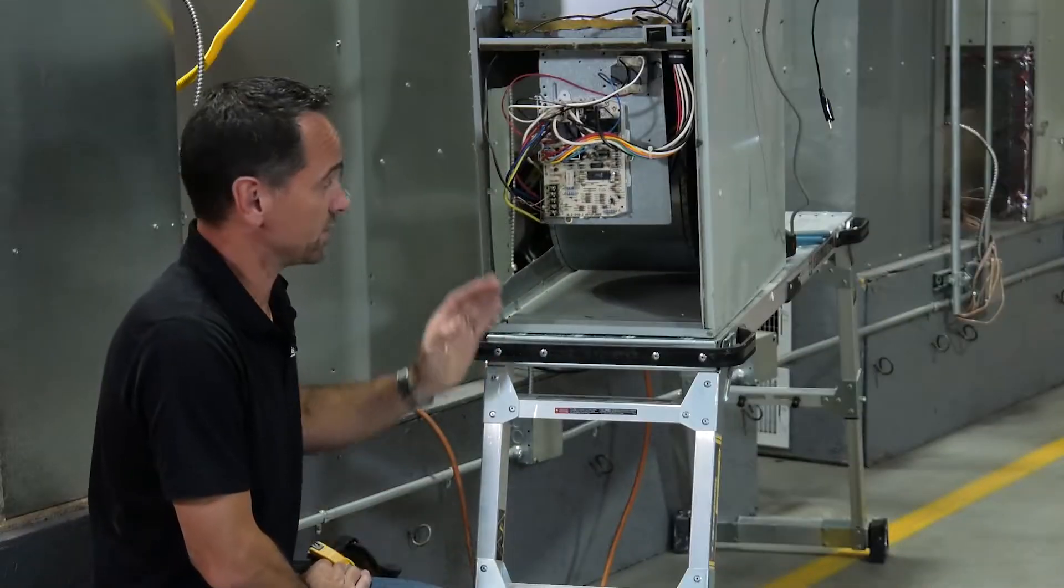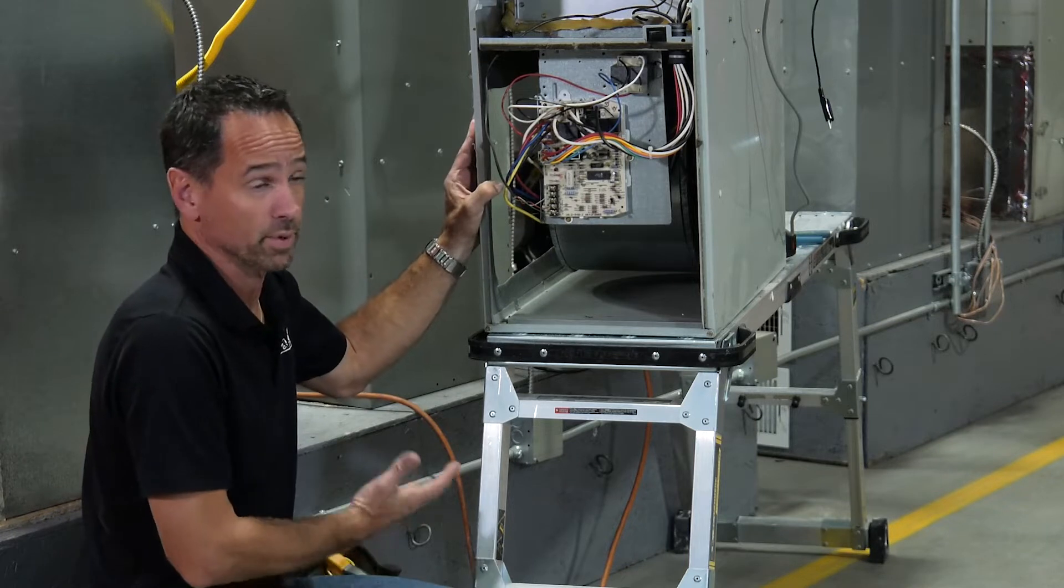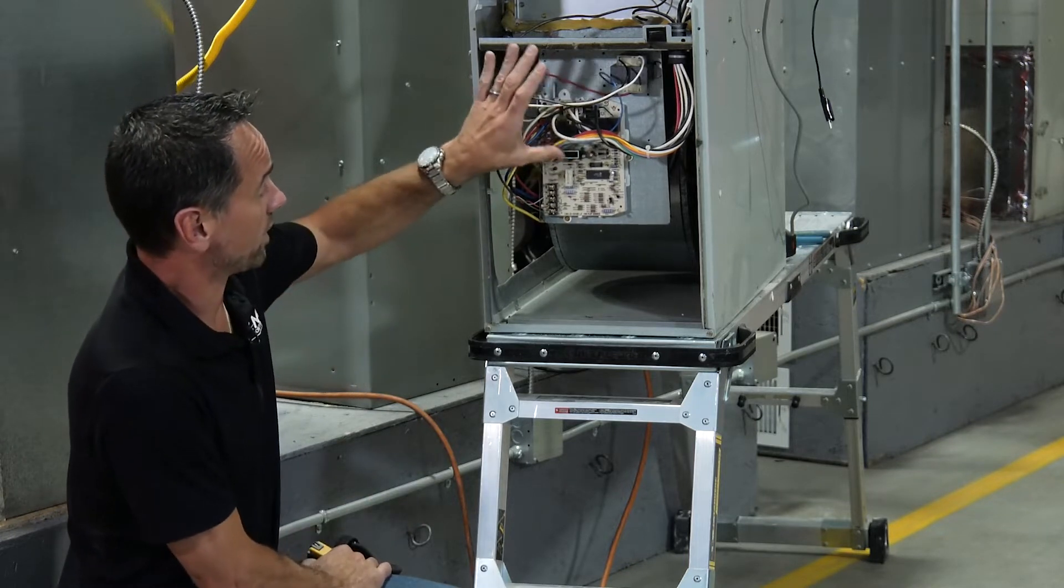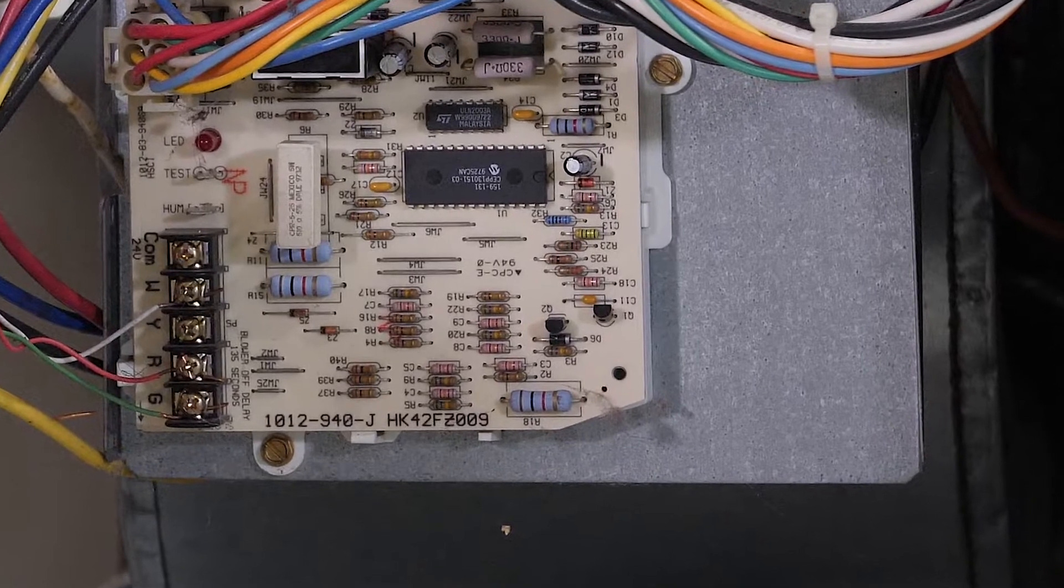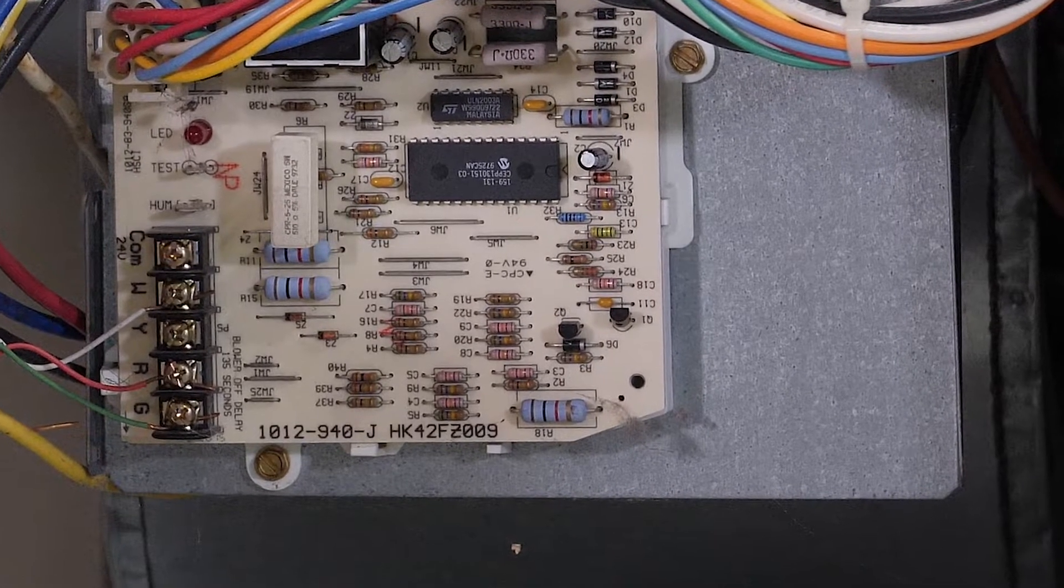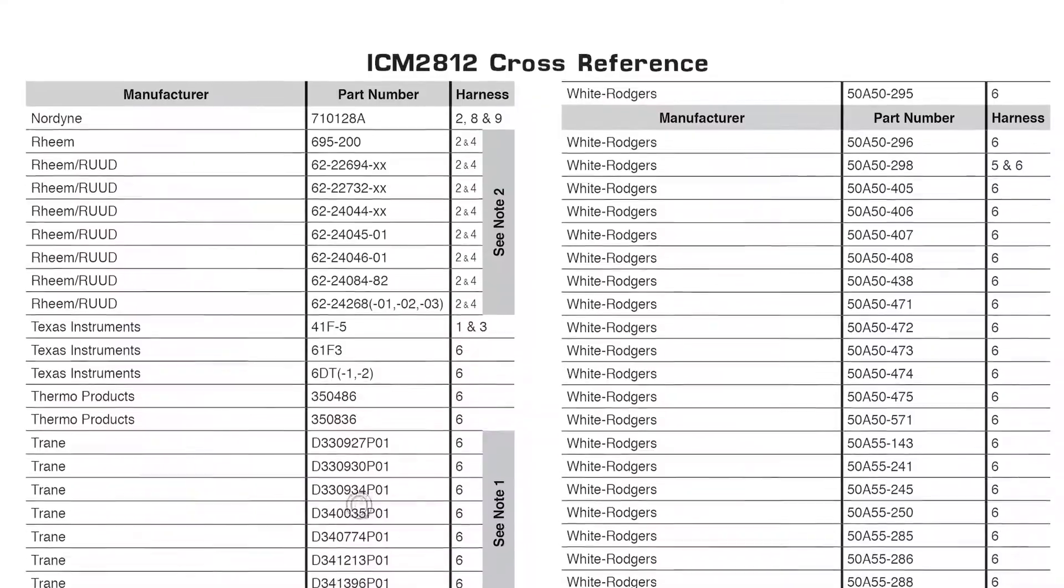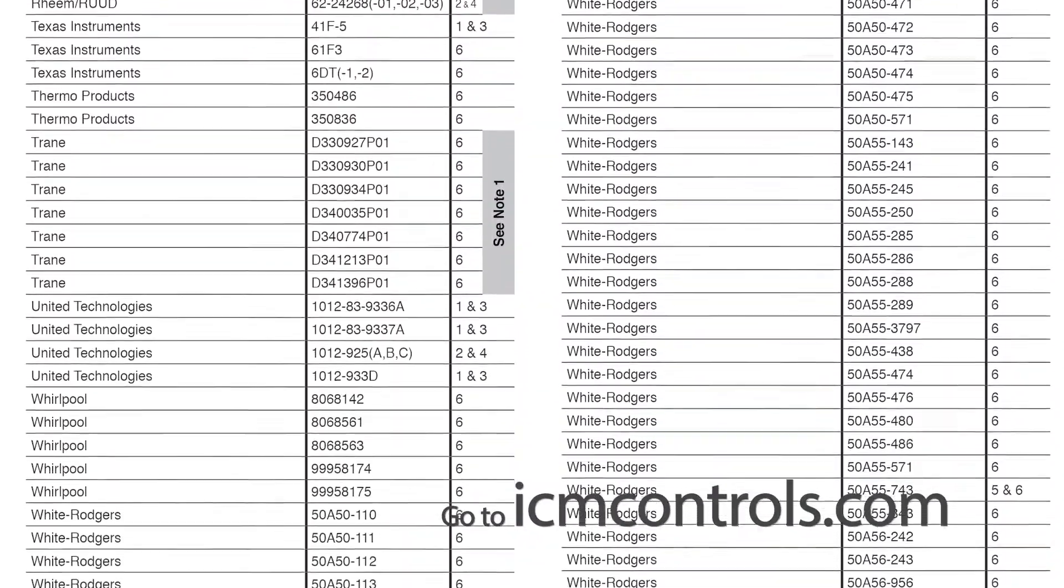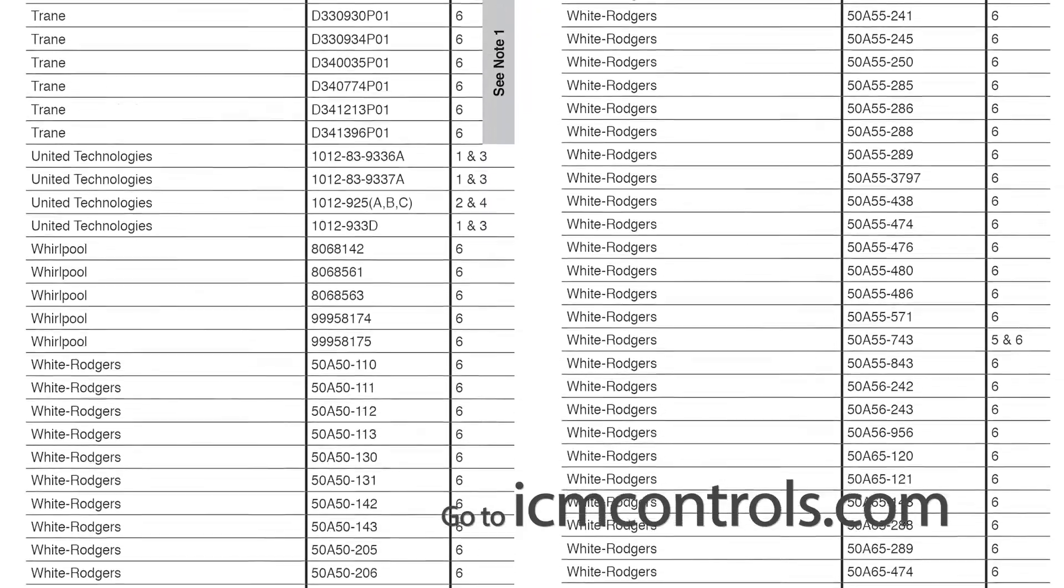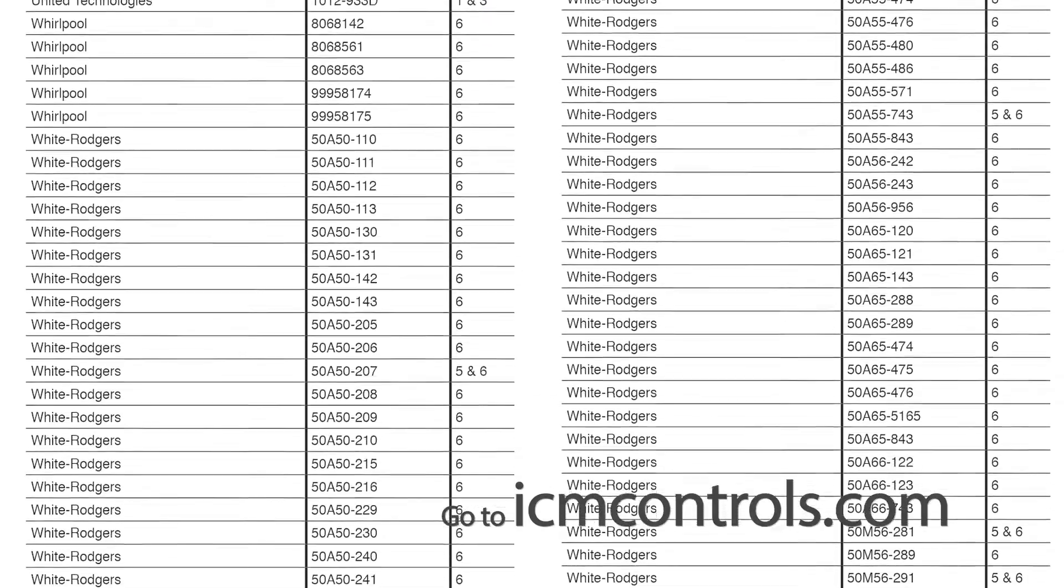So what we're working on today here is a Payne furnace, which is a Carrier product. We already went ahead and figured out which board we have, and it's going to give us a model number HK42FZ009. So what we're going to want to do is take that part number and either go to icmcontrols.com and check the cross reference or pull out the installation manual right out of the box.